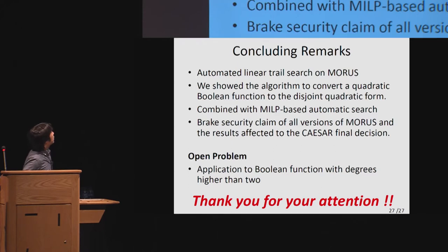I'd like to give the concluding remarks. We did automated linear trail search on MORUS. We showed a new algorithm to convert a quadratic Boolean function to the disjoint quadratic form. The searching procedure is combined with our MILP-based automatic search. As a result, we broke security claim of all versions of MORUS. One open problem is our algorithm is now taking the input as quadratic Boolean functions. So the open problem is extending this conversion to deal with Boolean functions with degrees higher than 2. That's about it. Thank you for your attention.